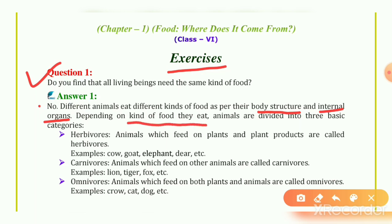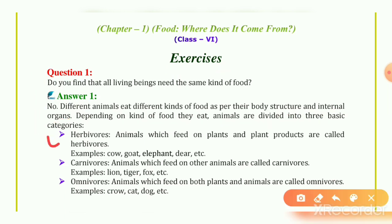The animals are divided into three basic categories. First, Herbivores. Animals which feed on plants and plant products are called Herbivores. Herbivores का meaning है कि जो भी animal है वो सिर्फ plants खाता है और plants products खाता है। Examples of Herbivores: Cow, Elephant, Deer.